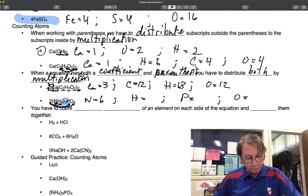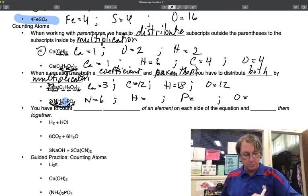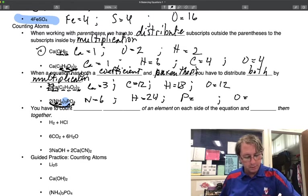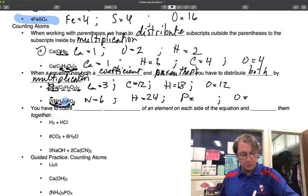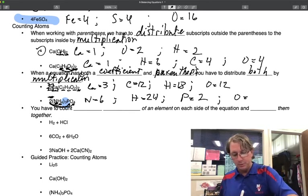Hydrogen has the 4, so 3 times 4 is 12, times 2 is 24. Phosphorus is a 1, and it's not in parentheses, so the only number that applies is this coefficient out here, so it's 1 times 2 is 2. Oxygen has the 4, and again, there's no parentheses, so the only number that applies is the coefficient, so 4 times 2 is 8.